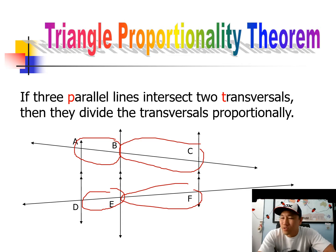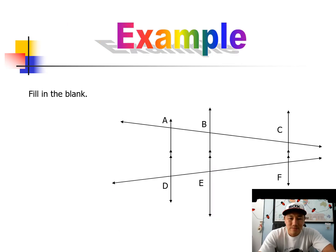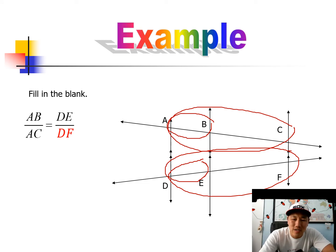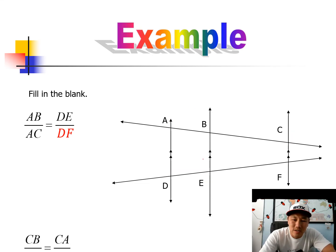Let's see how we can do some examples with that. Here's the same picture. You have to fill in the blank by looking at the proportions. They are saying that AB over AC should equal DE over, what do you think? DF. So that's how they want you to set up the proportions.